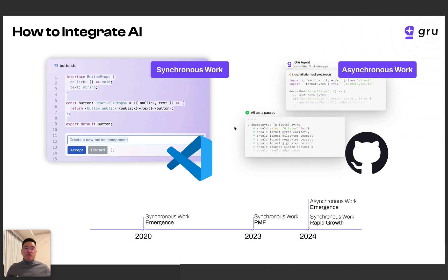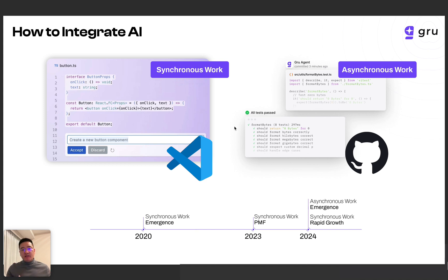The collaboration has two types. First, it's synchronous, and the other one is asynchronous. People may be pretty familiar with the synchronous one — GitHub Copilot or Cursor. This is AI living inside your IDE, and it works simultaneously with humans. When you're typing, it's working. We've had this kind of product for a long time, since 2020.